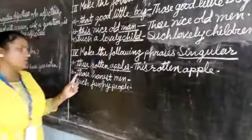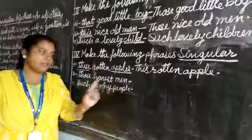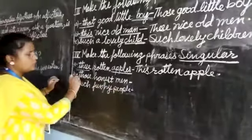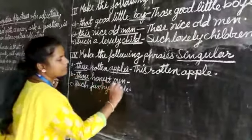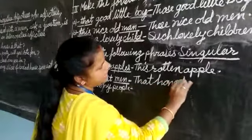Next: 'Those honest men.' Those and men are in plural form. The singular of those is that, and the singular of men is man. So our answer will be: that honest man.